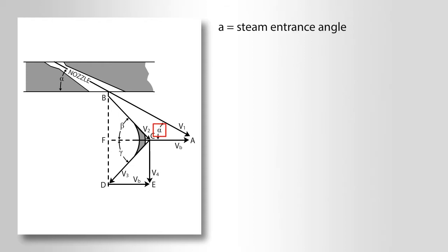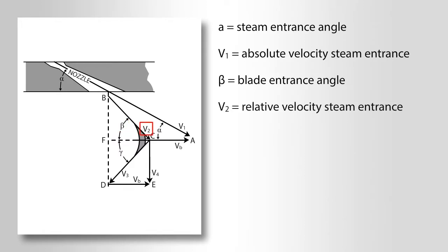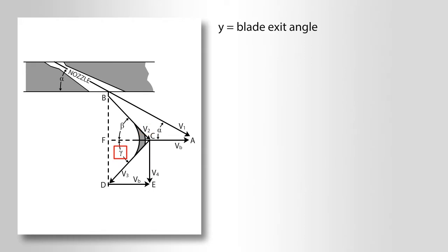Alpha equals steam entrance angle. V1 equals absolute velocity steam entrance. Beta equals blade entrance angle. V2 equals relative velocity steam entrance.